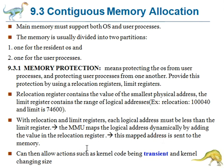The mapped address is sent to memory. The relocation register scheme provides an effective way to allow the operating system size to change dynamically. The operating system contains code and buffer space for device drivers. If a device driver is not commonly used, we do not want to keep that code and data in memory, as that space can be used for other processes. Such code is called transient operating system code — it comes and goes as needed.